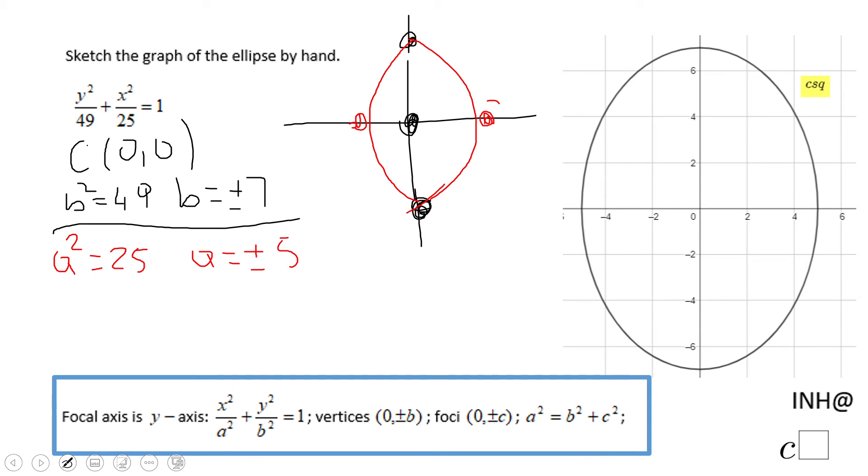And that is the graph. If you need to find c, if you need to find where the foci are, we're going to do c squared equals 49 minus 25, b squared minus a squared in this case, and that will be 24.